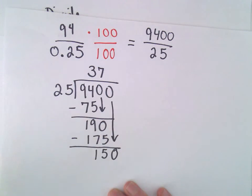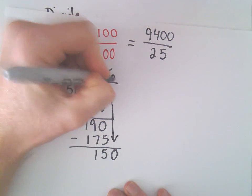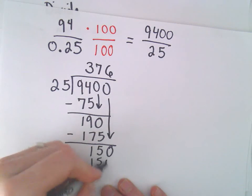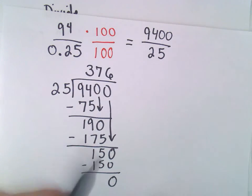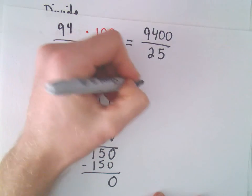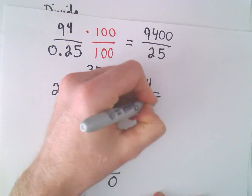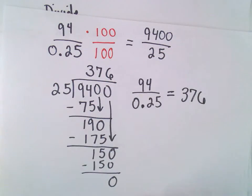And if we drop down our 0, 25 will go into 150 exactly 6 times. 6 times 25 is 150, so we don't have any remainder. So if we do 94 divided by 0.25, we'll be left with 376.